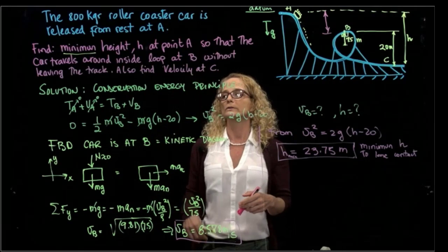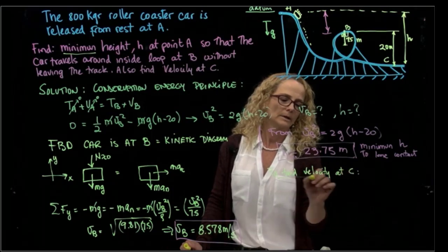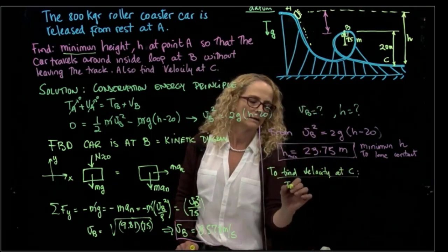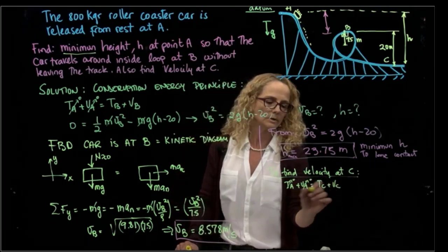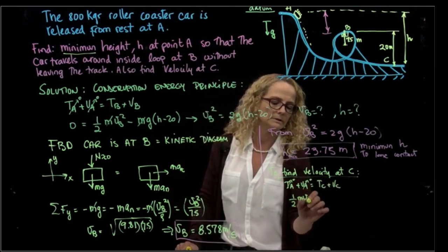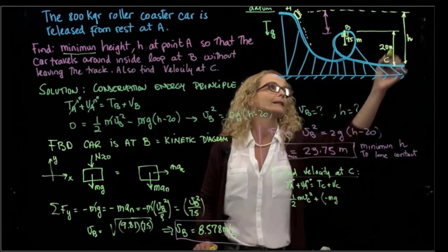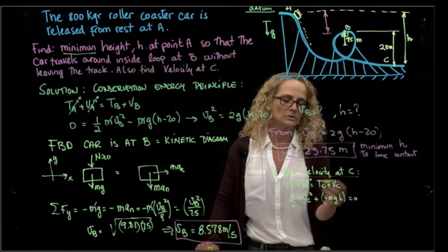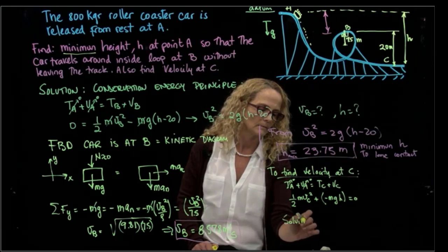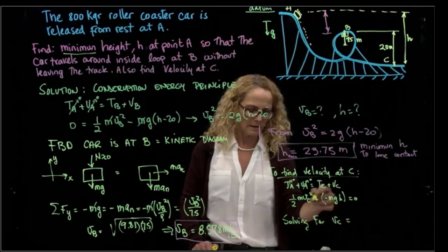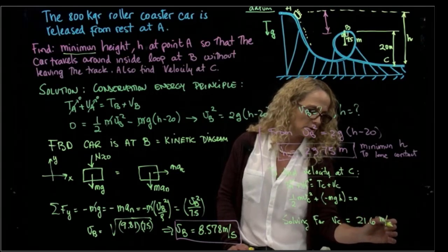And they also want us to find the velocity at C. Velocity at C. We know that TA plus UA equals TC plus UC. And we already know this is 0, and this is 0. And this will be one half mass velocity C squared plus, and of course I lost energy, so it will be minus mg that height that I already know equals 0. So it will be very easy because the only unknown that I have here is vC. Solving for vC, that gives me the velocity at C, which is 21.6 meters per second.